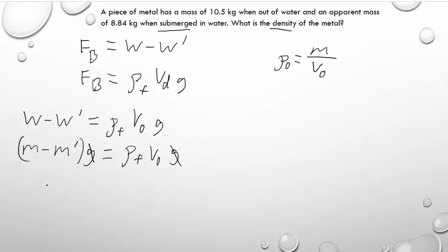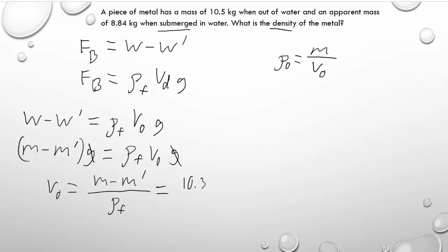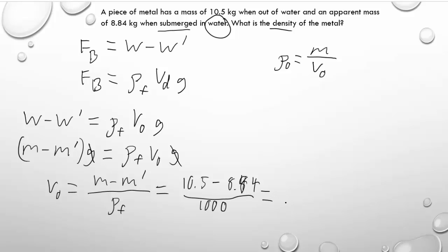We're solving for the volume of the object: that's the difference in masses — actual mass minus apparent mass — divided by the density of the fluid, which is water. We've got 10.5 kilograms out of the water and 8.84 kilograms in the water, divided by the density of water, 1,000. We get a volume of 0.00166 cubic meters.